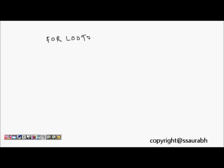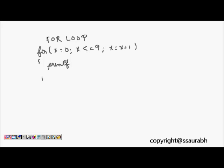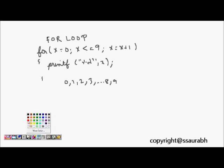We continue with the for loop. Looping is done when we want to repeat a certain section of a block of code. For example, writing `for (x = 0; x <= 9; x = x + 1)` with `printf("%d", x)` will print out the numbers from zero to nine. That will be the output.